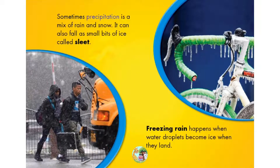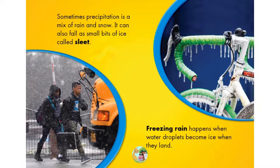Sometimes precipitation is a mix of rain and snow. It can also fall as small bits of ice called sleet. Freezing rain happens when water droplets become ice when they land.